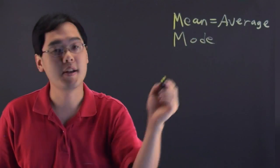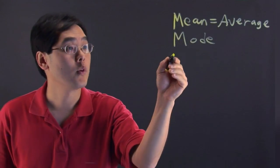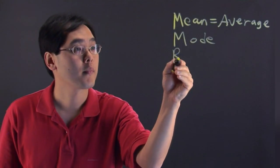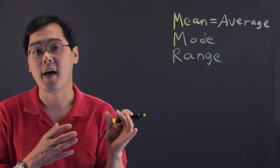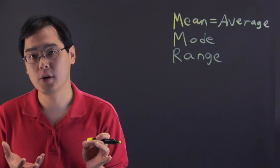Mode is the number that appears the most. We'll get to that in a bit. Range is defined as the highest number minus the lowest number.